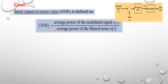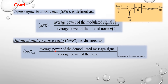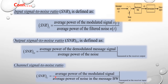The output signal-to-noise ratio SNR_output is defined as the average power of the demodulated message signal divided by the average power of the output noise, measured at the receiver output. The channel signal-to-noise ratio SNR_channel is equal to the average power of the modulating signal divided by the average power of the noise in the message bandwidth, measured at the receiver input.